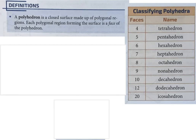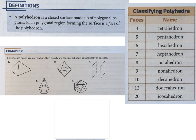A polyhedron is a closed surface made up of polygonal regions. Each polygonal region forming the surface is called a face of the polyhedron. They've given a list of types of polyhedra based on how many faces they have: tetrahedron, pentahedron, hexahedron, heptahedron, octahedron, nonahedron, decahedron, dodecahedron, and icosahedron. The prefixes are the same as for polygons.